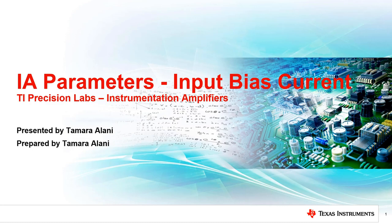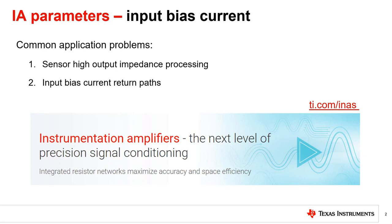Hello and welcome to the lecture for the TI Precision Lab discussing instrumentation amplifier parameters, specifically input bias current. In this video, we will cover two common application problems regarding input bias current: the first is how input bias current interacts with the high output impedance of a sensor connected to the IA input; the second is the importance of input bias current return paths for linear IA design.